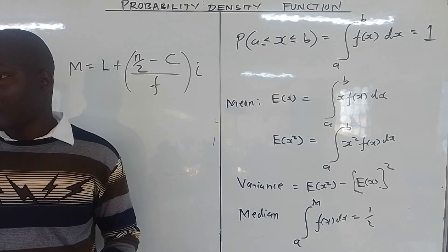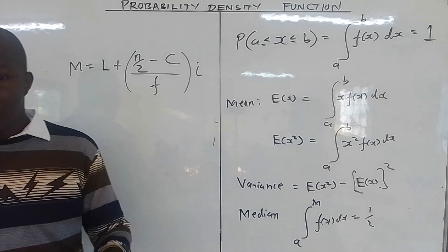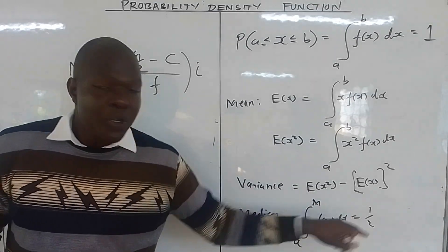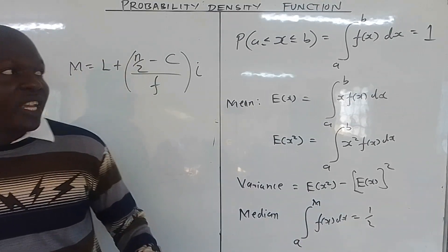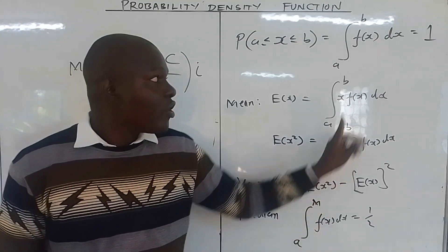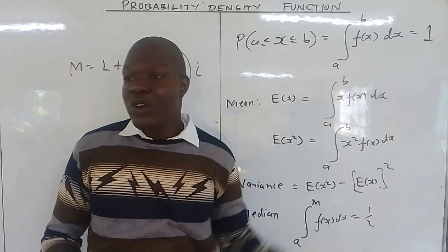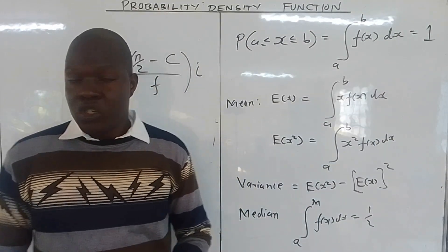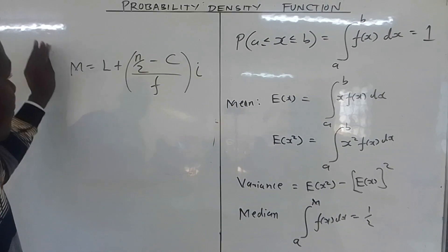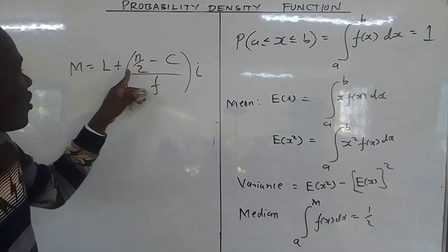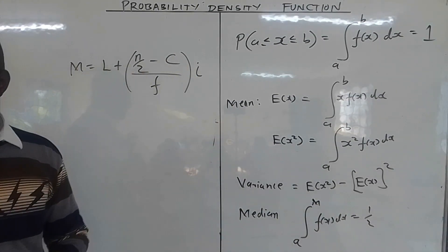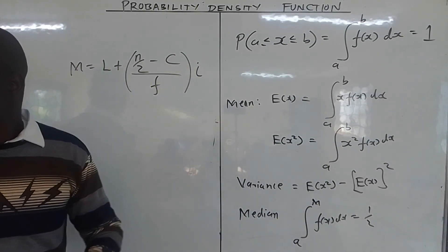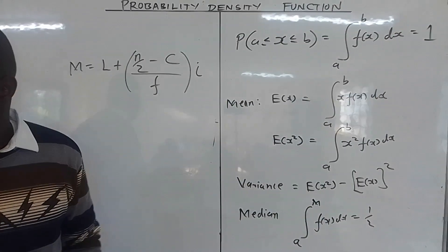This is how we define the median in case of a continuous random variable. You integrate from the lower limit to the median value, and you are supposed to get one half. If you integrate to the upper limit you get the full probability measure. Having seen this, the median is what shows us how to get the quartiles, the deciles, and the percentiles.